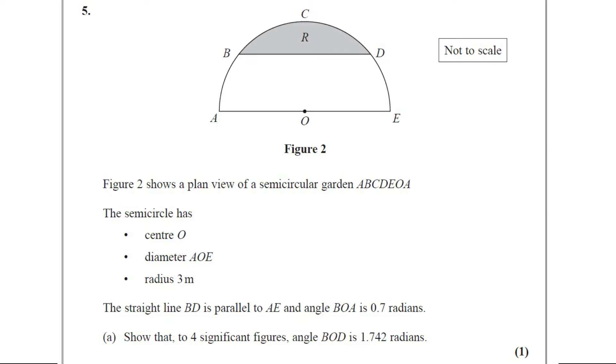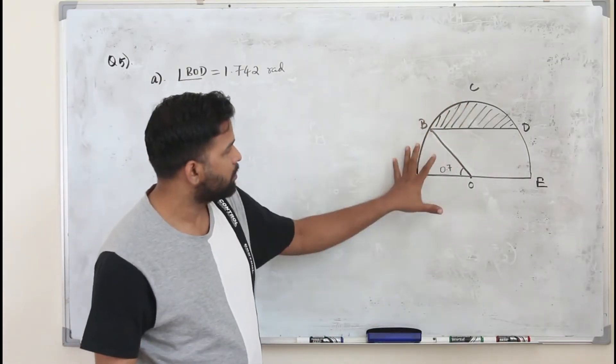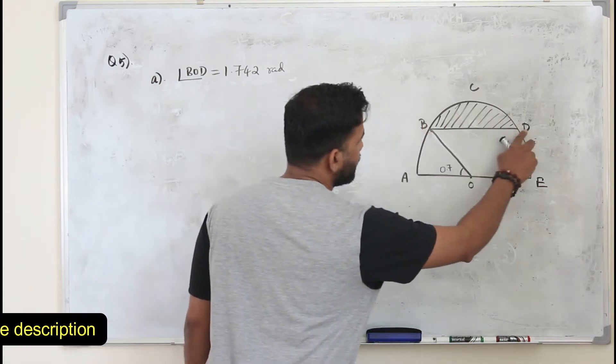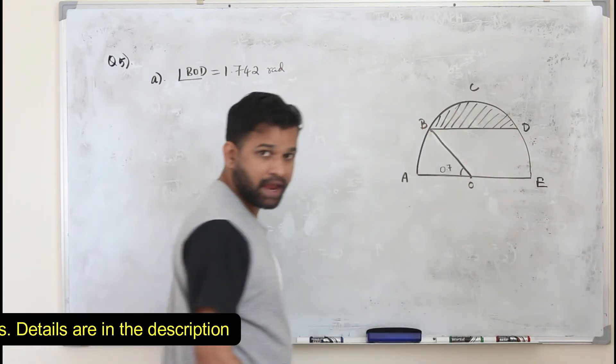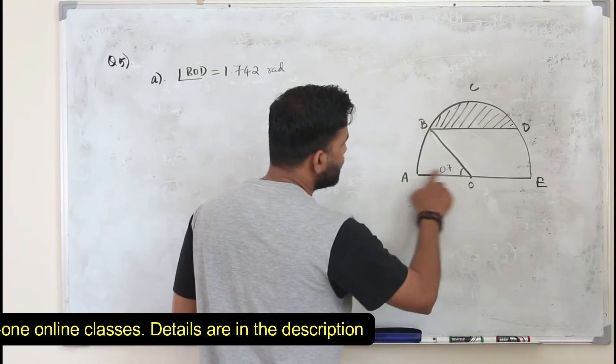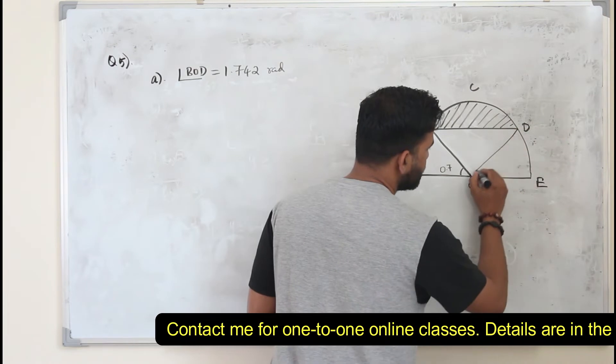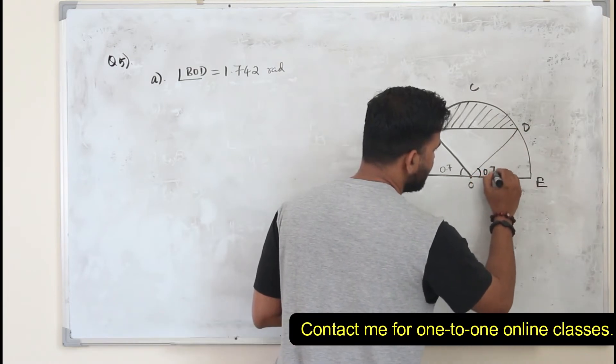This question got one mark. So here you have this semicircular shape and this line BD is parallel to AE. And this angle is given. Angle BOA is 0.7 radians. So definitely this also will be 0.7 radians.